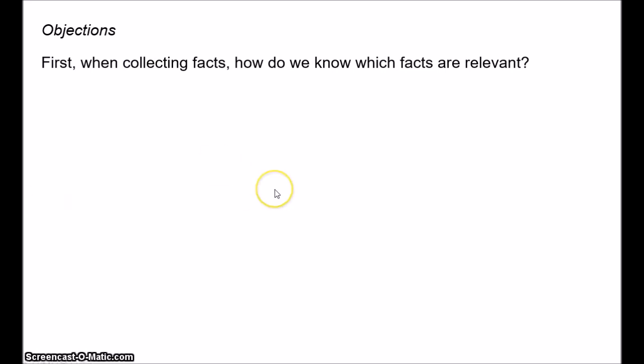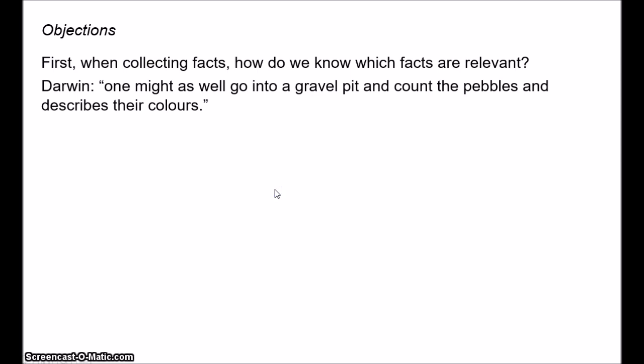Now, this might seem like an intuitively appealing sort of method, but it faces a number of problems. These are discussed in some detail by Carl Hempel in his book Philosophy of Natural Science, which is available online. First of all, the first step of the method requires us to build a collection of facts. And in a kind of unbiased way. But there are an infinite number of facts. How do we know which facts are relevant? The concern here is that trying simply to collect facts in this kind of neutral, unbiased way will lead to all sorts of pointless observations.